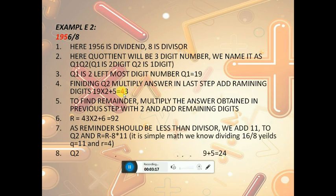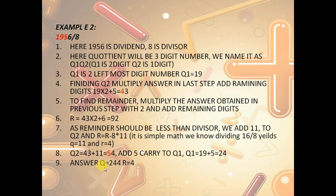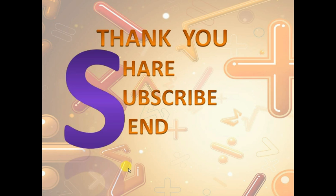This quotient should be added to q2. Hence q2 becomes 43 plus 11, which is 54. Since q2 is 1 digit, the 5 will be the carry to q1. So q1 becomes 19 plus 5, which is 24. Now the answer will be 244 and r equals 4.